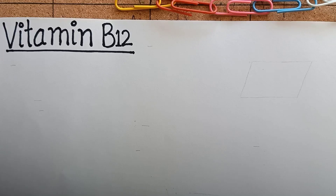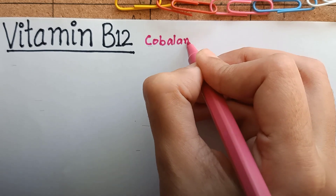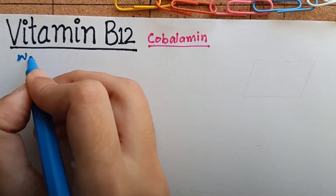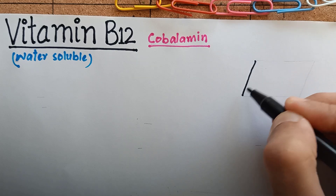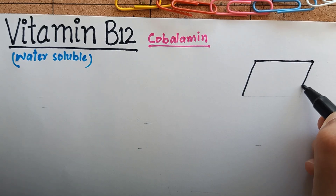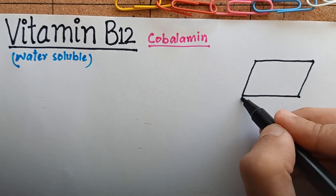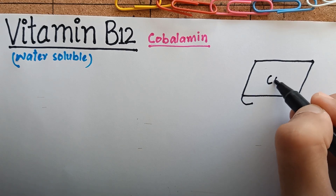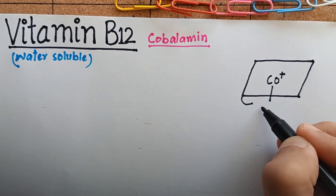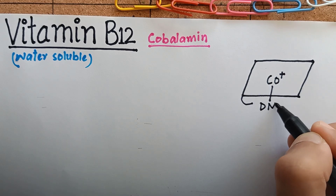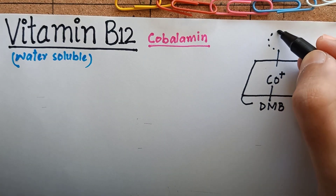We are going to learn about vitamin B12, also known as cobalamin. It is a water-soluble vitamin. Its structure consists of a corrin ring system, which resembles the porphyrin ring found in heme. In the center of this ring, there is a cobalt atom, which holds a dimethylbenzimidazole group on one side, and there is a place for the attachment of a substituent group on the other side.